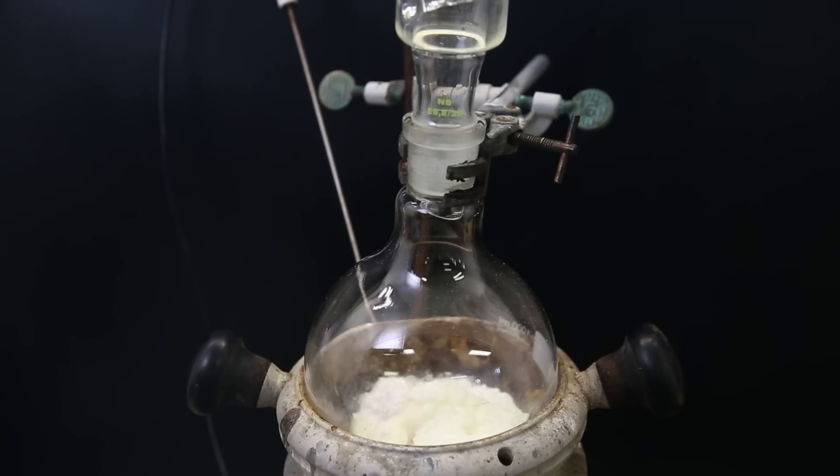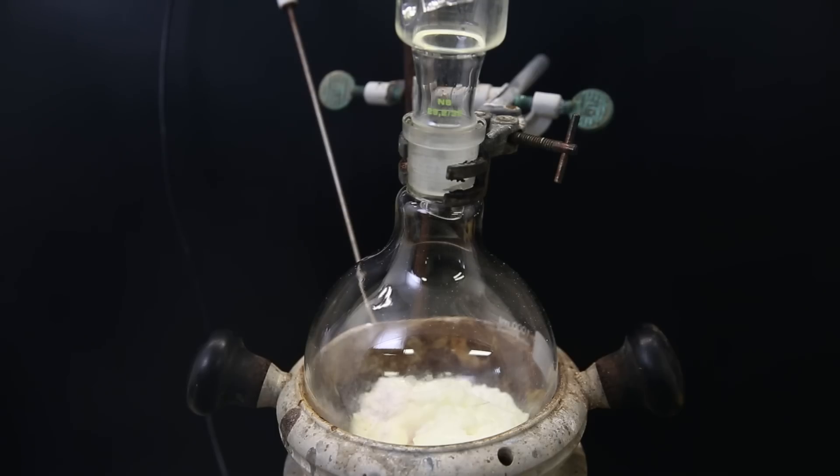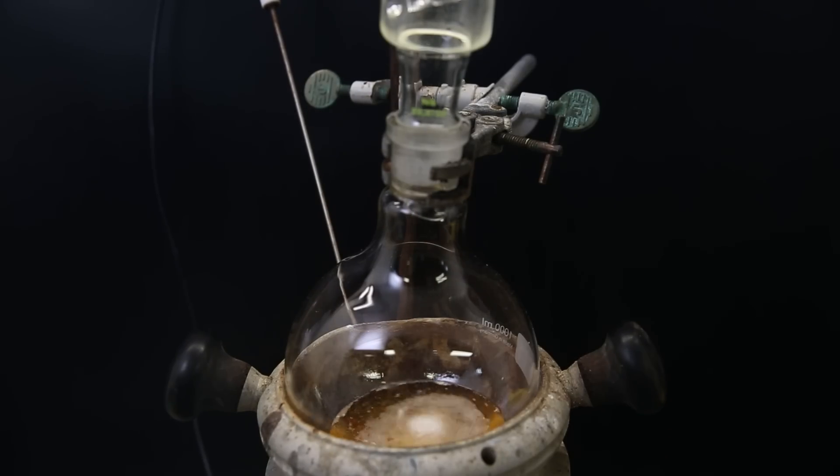I now attach a condenser and heat it to a reflux, causing the mixture to gradually liquefy and expel a lot of hydrogen chloride. After the initial gas formation, it calms down and it is now a bubbling orange-yellow liquid. I then leave this to stir and reflux for two hours.